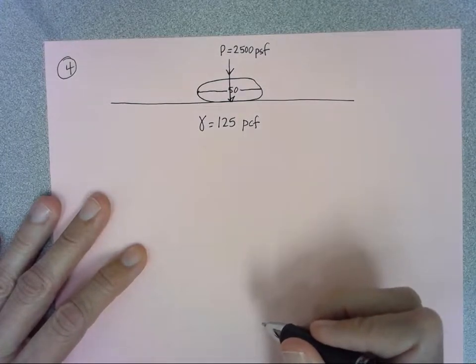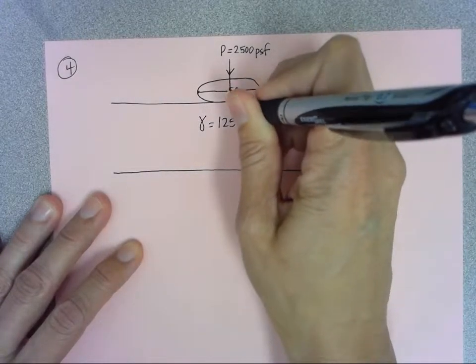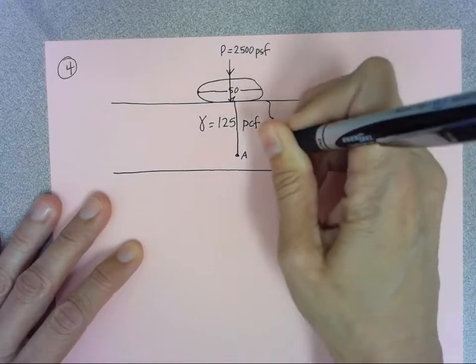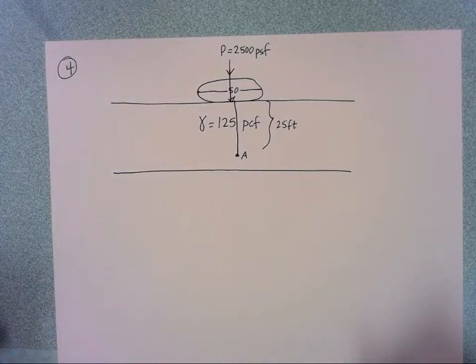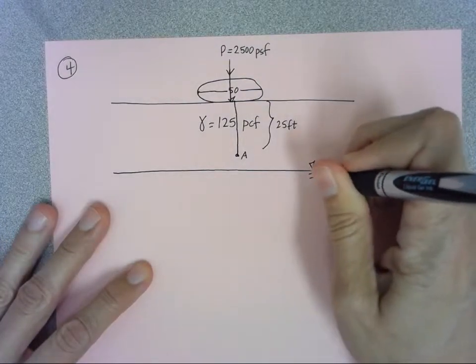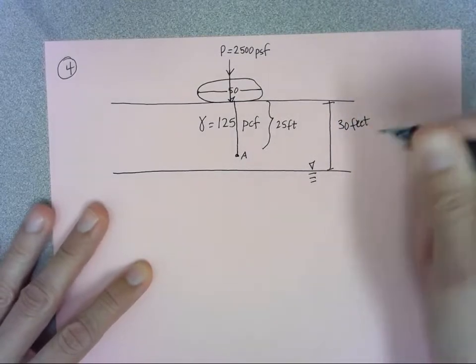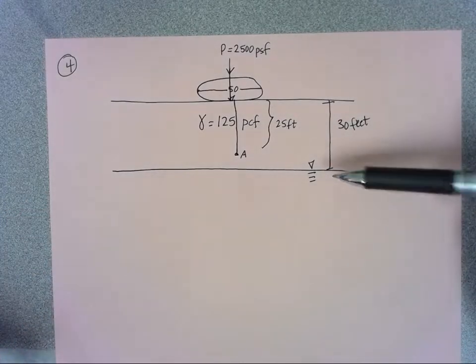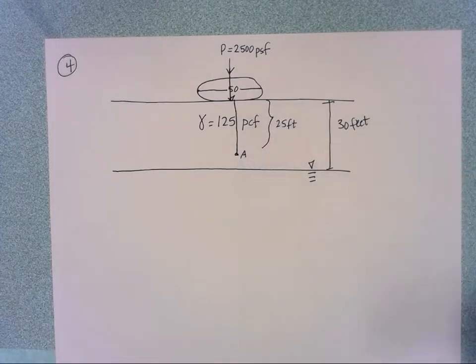We want to find the effective vertical stress 25 feet below the center. We'll take this as the center here and we want to go 25 feet, let's call this at the 25 foot mark. The water table is located 30 feet below. So you can already see here with the water table being below the point of interest, we're not going to have to worry about subtracting off water or pore pressure because our effective vertical stress is going to be the same thing as our total stress.